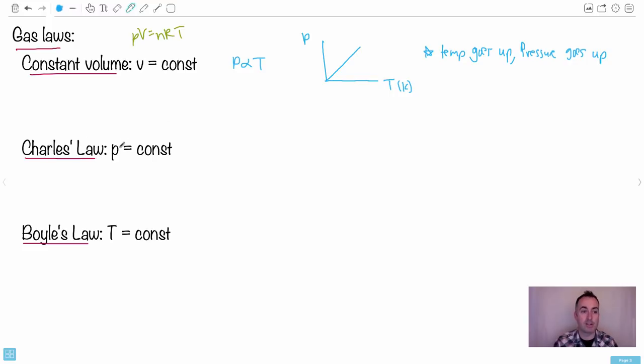Charles' law is where the pressure is constant. In thermodynamics, we have special rules for all these. This is isovolumetric, this is isobaric, and this is isothermal. But what you really need for the IB is just knowing that pressure is constant. If P is constant, then V is proportional to T. So volume is proportional to temperature. I can do a graph of volume and temperature in Kelvin. As temperature goes up, V goes up. Higher temperature means larger volume.